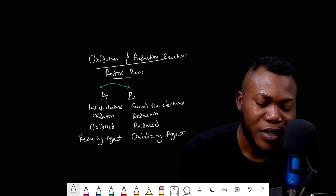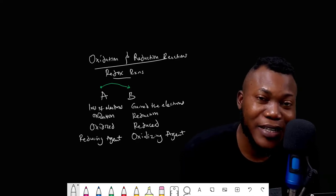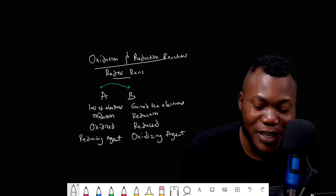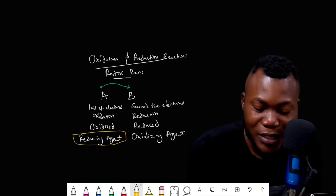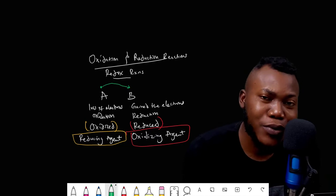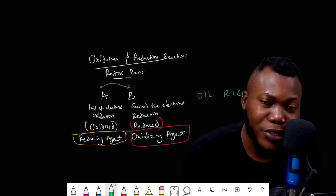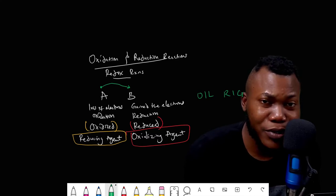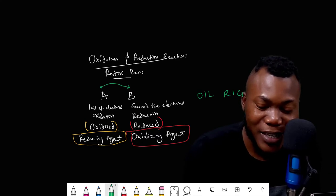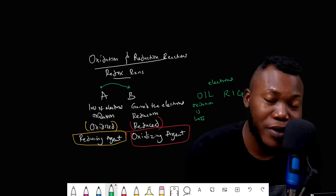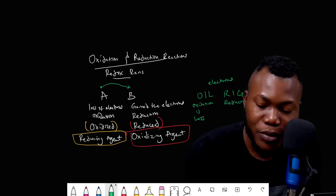Oxidation is simply a loss of electrons while reduction is simply a gain of electrons. The reducing agent gets oxidized while the oxidizing agent gets reduced. An easier way to remember this is the acronym OIL RIG: OIL stands for 'Oxidation Is Loss' while RIG stands for 'Reduction Is Gain' — what they are losing or gaining is electrons.